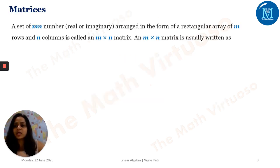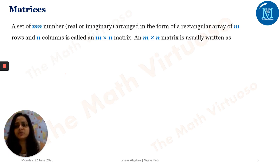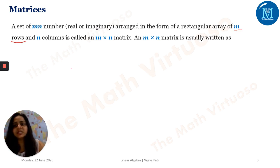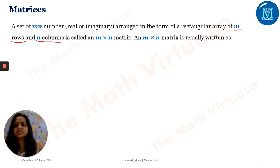What exactly is a matrix? It's a set of M×N numbers, which might be real or imaginary, arranged in the form of a rectangular array of M rows. Throughout this series, M will represent rows and N will represent columns. This is known as an M cross N matrix.